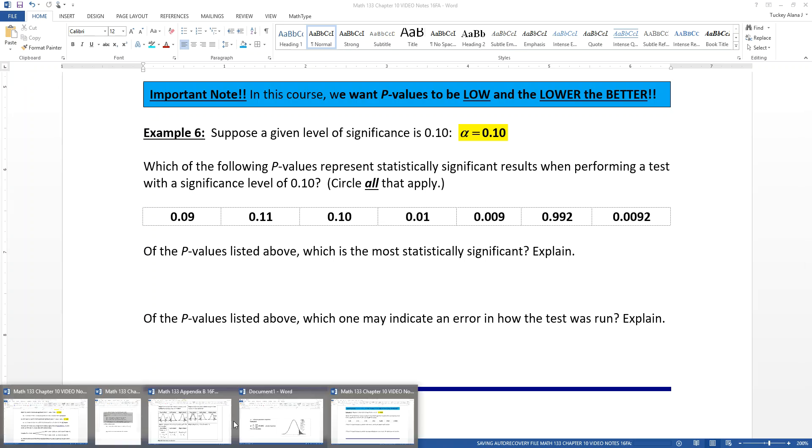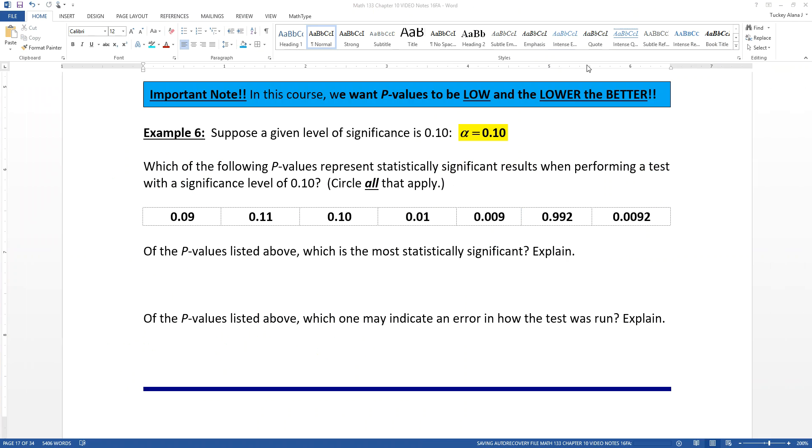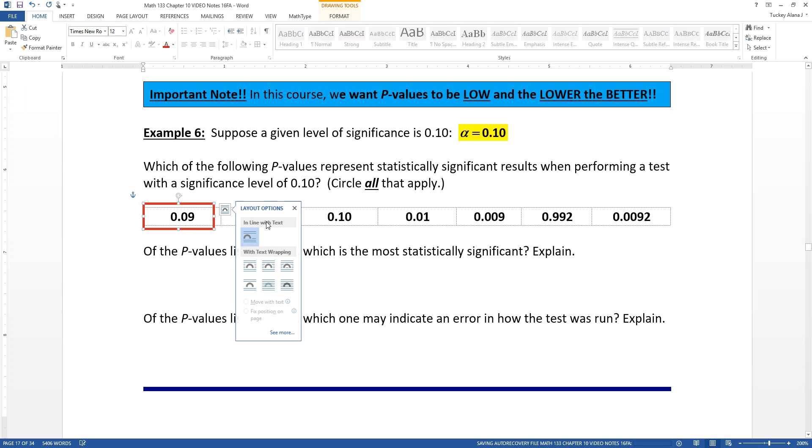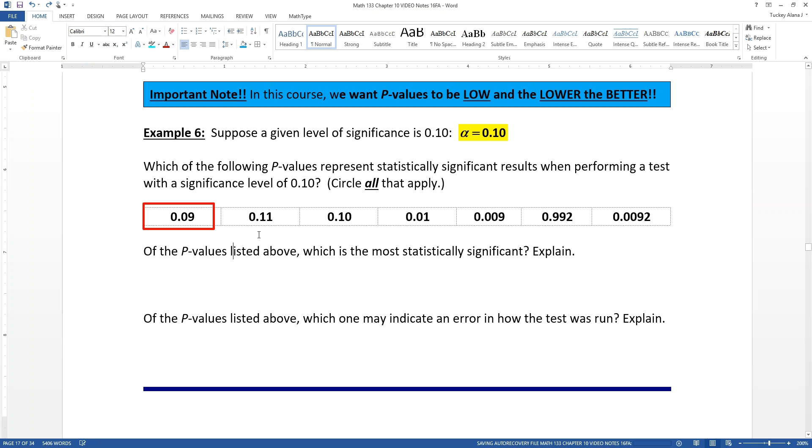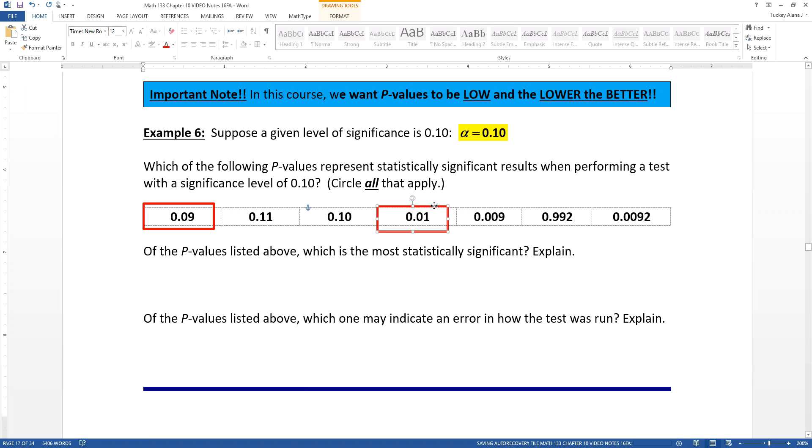Which of the following p-values represent statistically significant results when performing a hypothesis test at that 0.10 level? Circle all that apply. Well, remember from the hypothesis test that we want our p-value to be lower than alpha, and alpha is 0.10 for us. So that means that the statistically significant ones would be anything that is lower than our alpha value. So that would mean 0.09 is significant. 0.11 is not significant because 0.11 is not less than alpha. 0.10 is not significant.